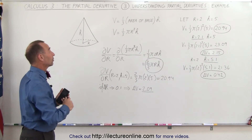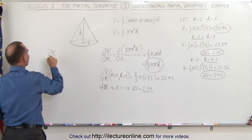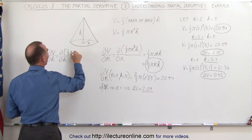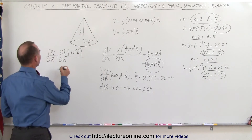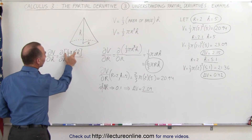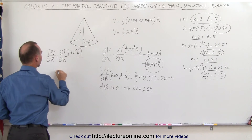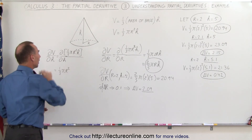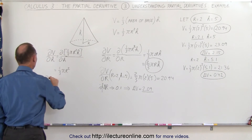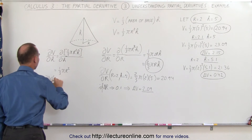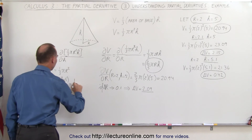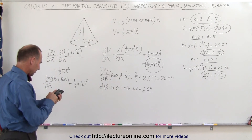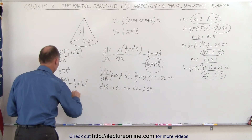Now let's take the partial derivative of the volume with respect to h. We take the partial of (1/3)πr²h with respect to h. In this case, (1/3)πr² remains constant and only h is the variable, so the partial derivative equals (1/3)πr² — since the derivative of h is 1. Evaluating at r = 2 and h = 5, that's (1/3)π(2²) = 4π/3, which equals 4.19.